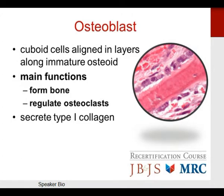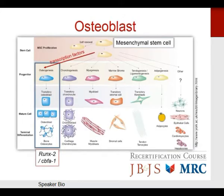The osteoblast forms osteoid. Its main functions are forming bone and regulating osteoclasts, directing bone metabolism via a number of different pathways. Osteoblasts secrete type 1 collagen. Markers of osteoblasts include alkaline phosphatase, osteocalcin, osteonectin, and osteopontin. Osteocalcin is the most abundant non-collagenous protein in bone — this is frequently tested.